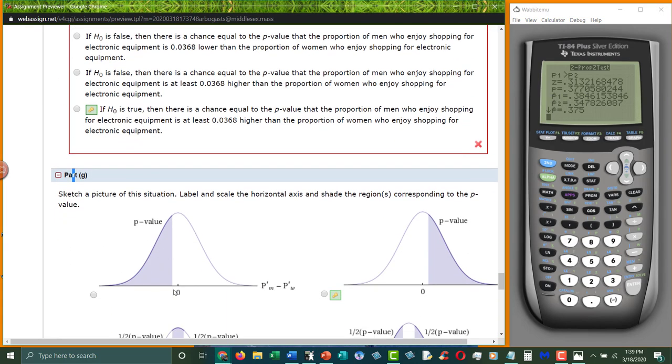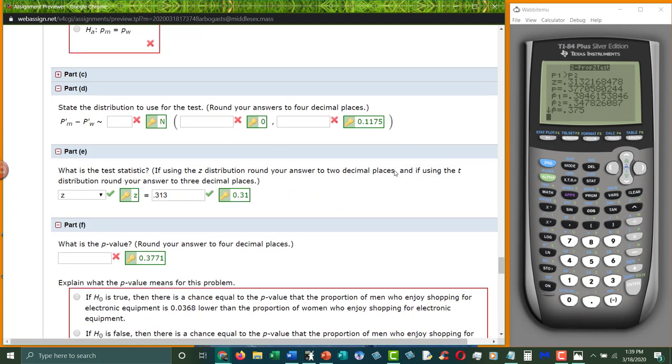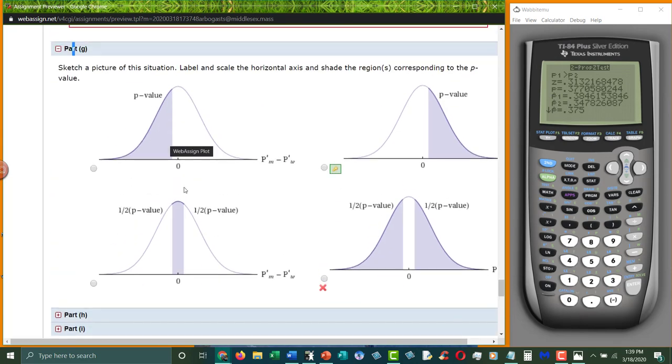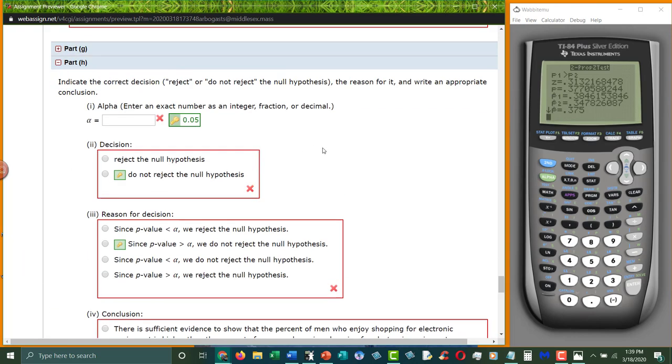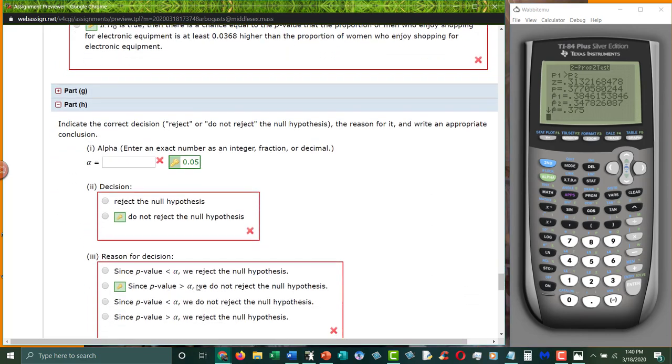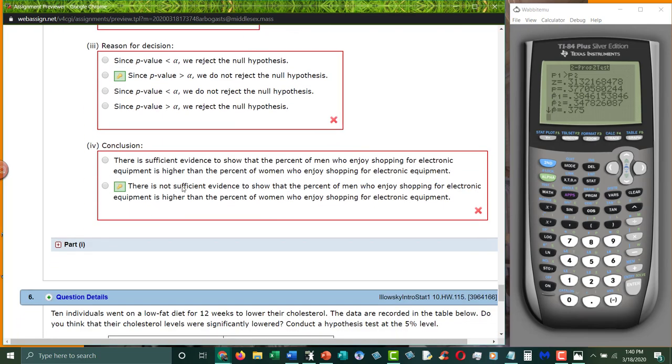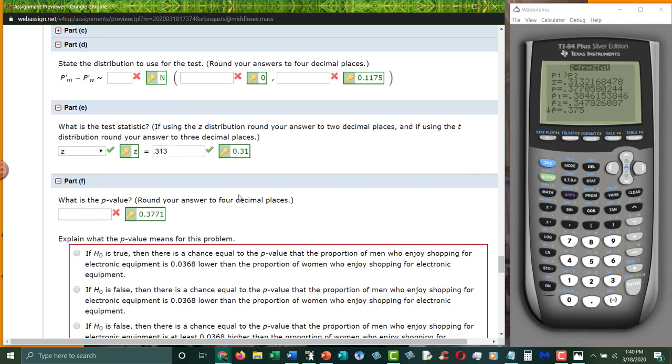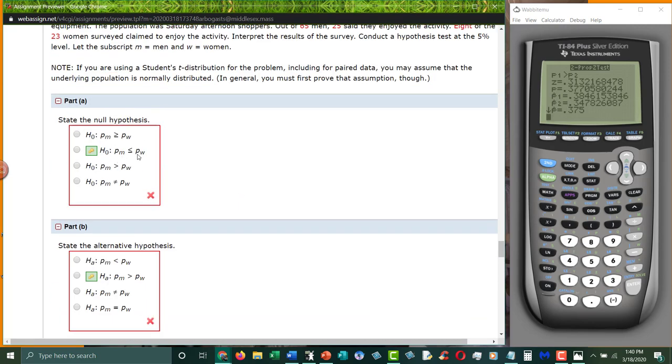To sketch a picture, we have our alternative hypothesis is greater than. The only one that's greater than has to be the answer. Our alpha is 0.05. Our p-value was 0.3771. Because p-value is greater than alpha, we don't reject. Therefore, there is not sufficient evidence to show that there is a difference between the probabilities of men and probabilities of women liking shopping for electronics. We can't prove this.